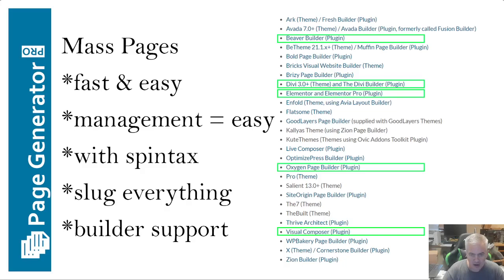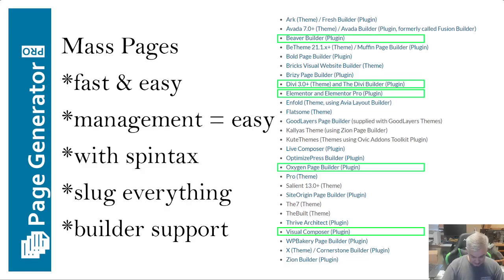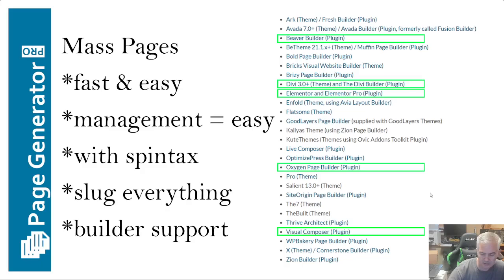So Page Generator Pro — the reason why I like it is it's fast and easy, and the management is really well done. I'm going to show you how you manage the pages once they're created. It does use spin text, so you throw spin text in there and when it generates the pages it uses the spin text to make the pages unique. You can slug everything — meaning you can put the slug you create into a Google Map, into an alt tag, into the title, into the URL — everywhere — and it'll change as it builds each page.